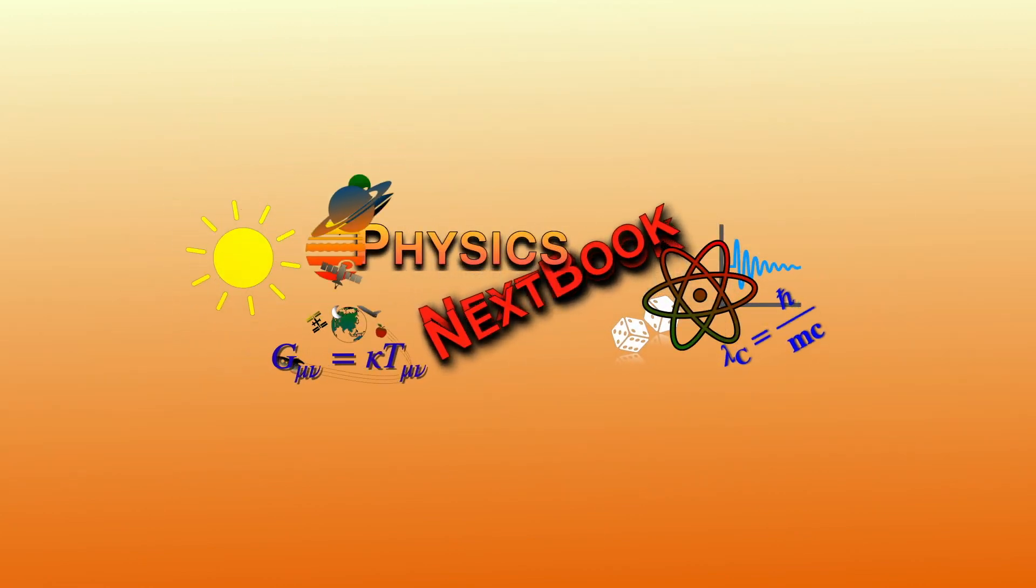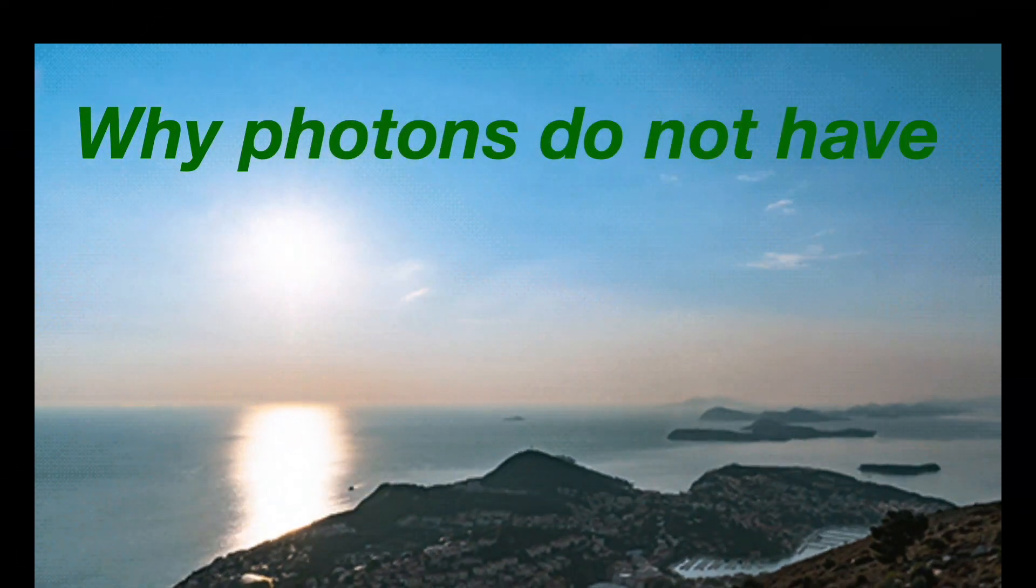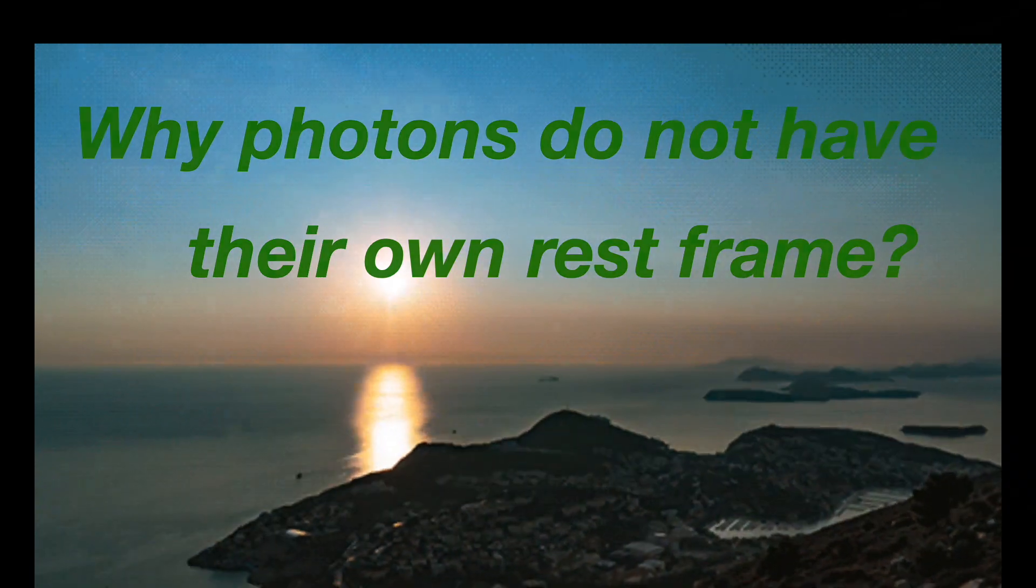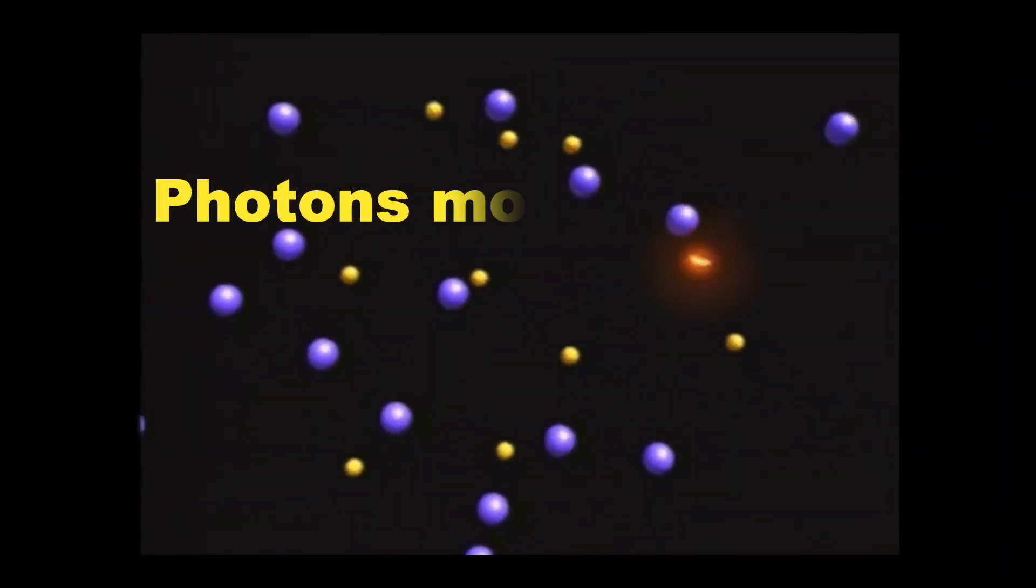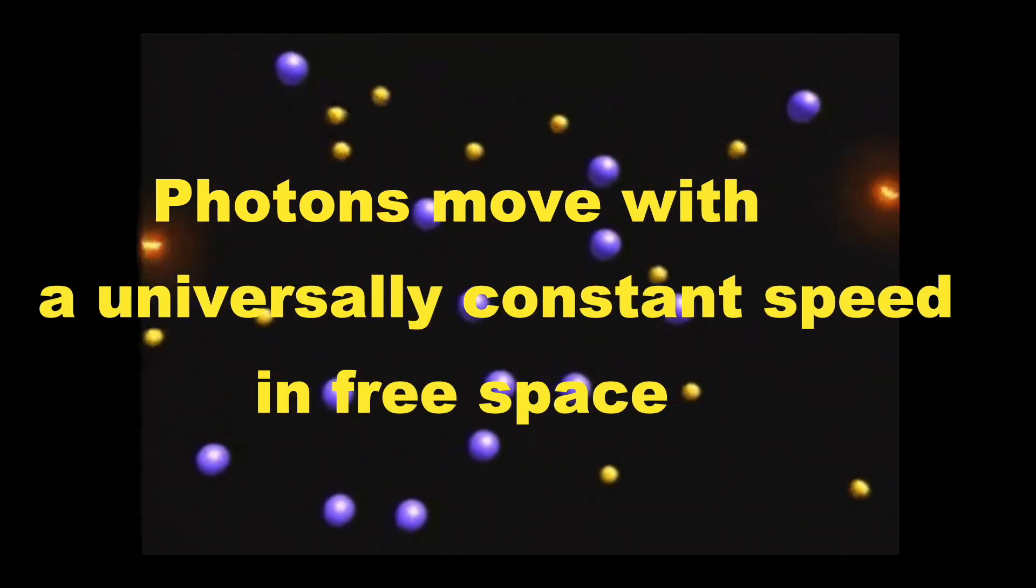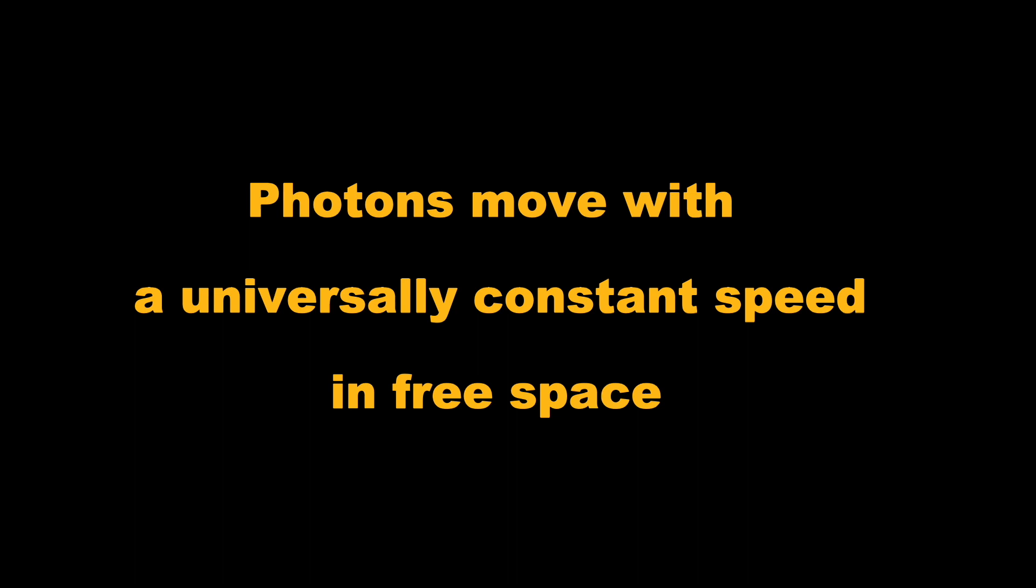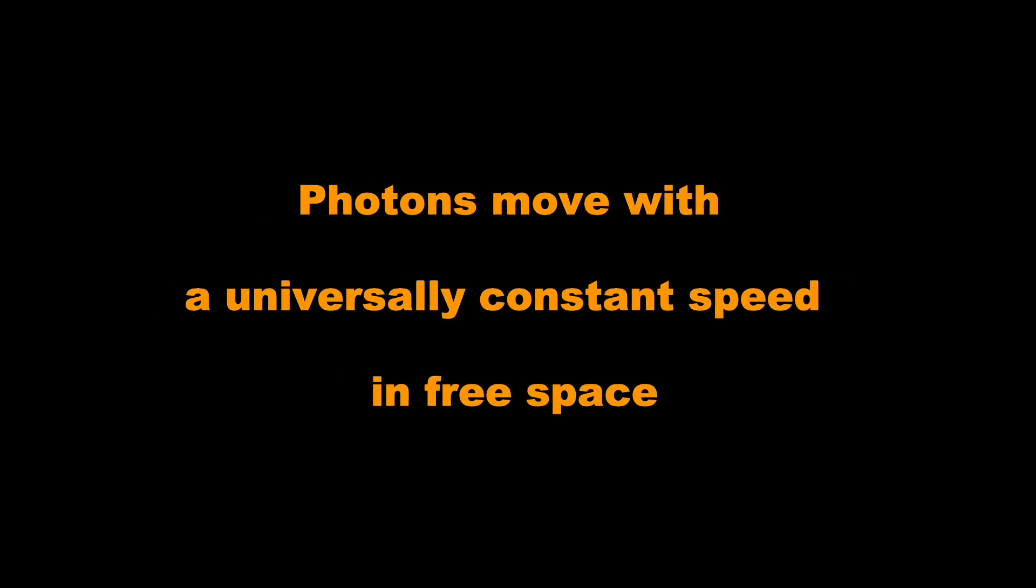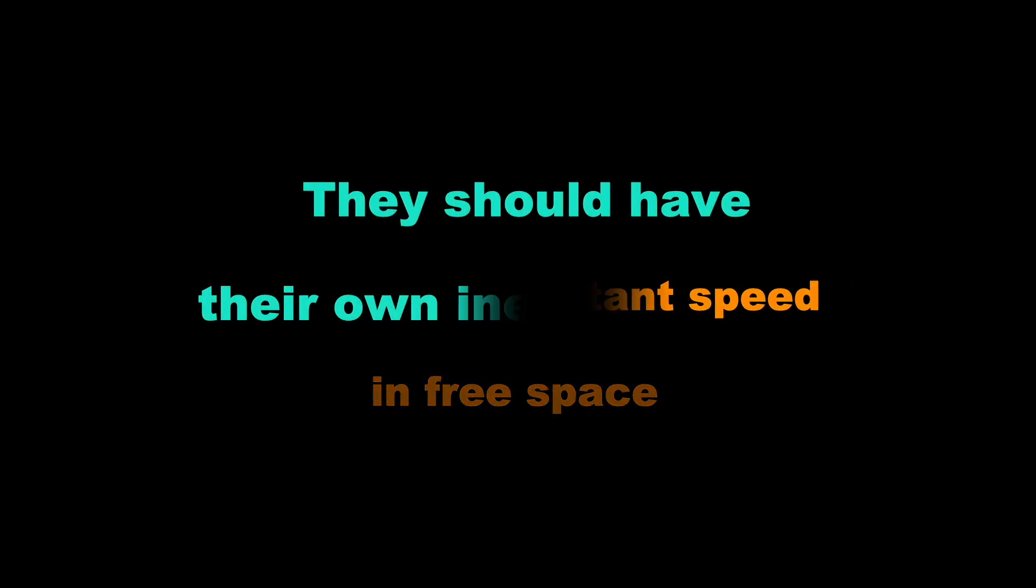Welcome to Physics Next Book. In this video we shall discuss why photons do not have a rest frame of their own. Come to think of it, in free space all photons move with the same constant speed that cannot change. So if they had a rest frame of their own, that would have been an inertial frame, alright?